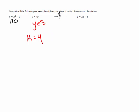And in this instance, y equals 2x over 5, well, that's the same thing as saying y equals 2 fifths times x. So, yes, I have direct variation. So, my answer here would be yes, and my k value is 2 fifths.